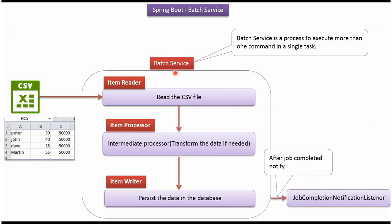Next we will see an example of batch service. Here you can see a CSV file with employee details: name, age, and salary. Item reader reads the CSV file and passes the data to item processor. Item processor transforms the data if needed and sends the transformed data to item writer. Item writer writes the data to the database. After the job completes, a job completion notification listener will be called.